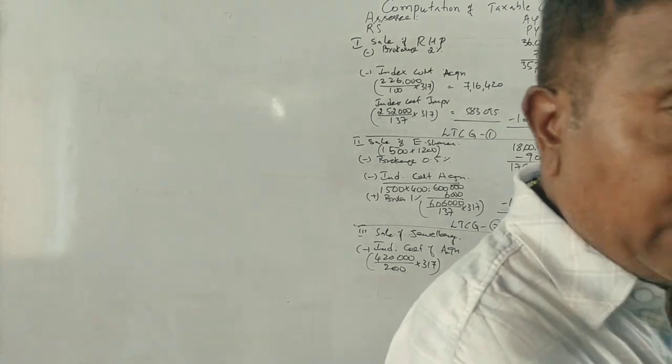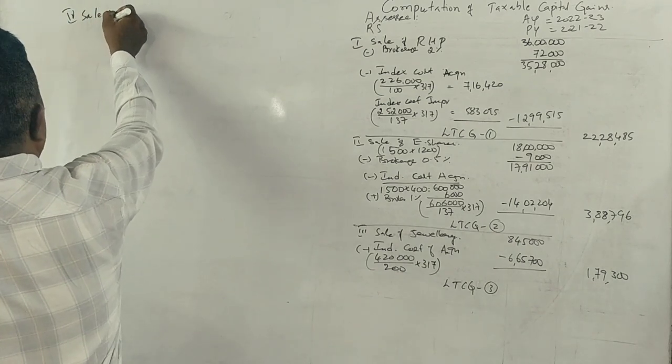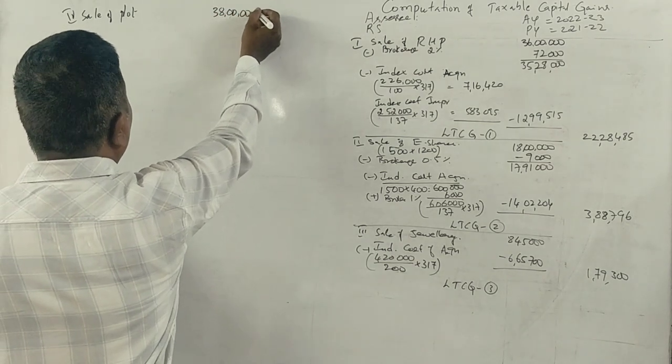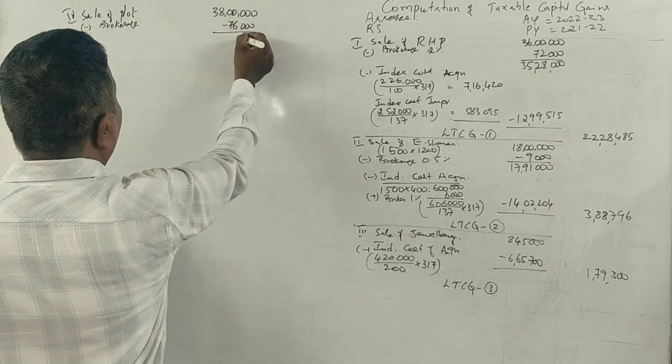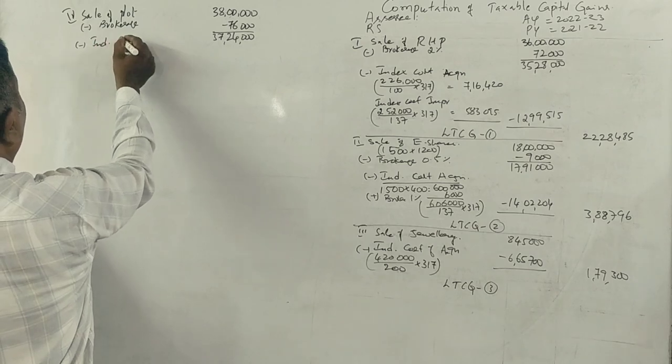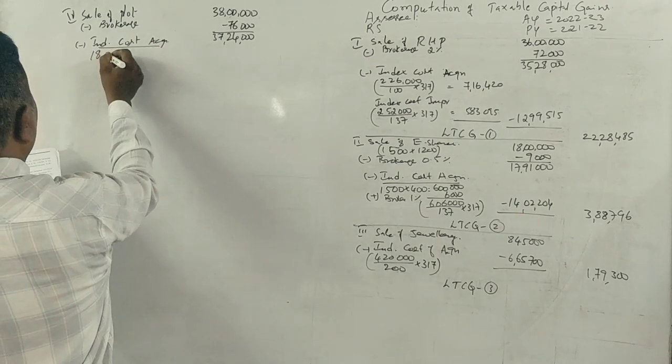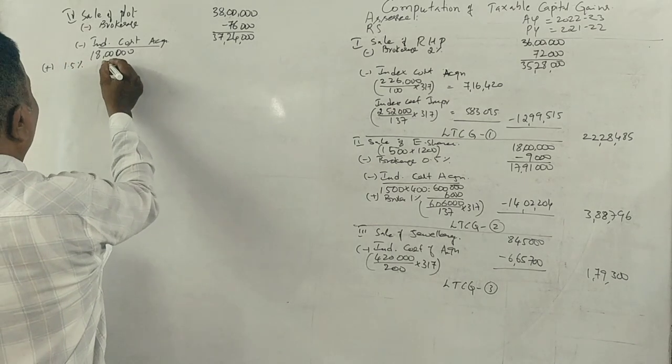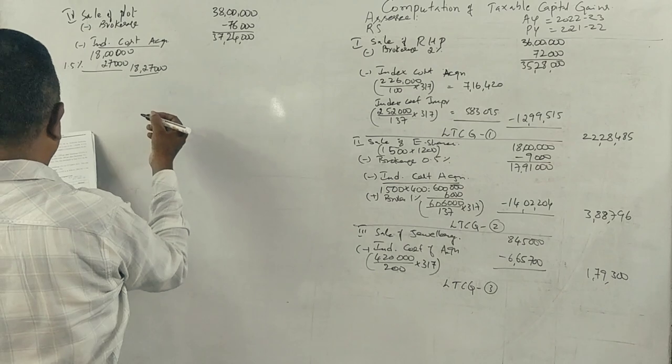Last one, sale of urban plot: 38 lakhs minus commission brokerage of 2% which is 76,000 equals 37,24,000. Index cost of acquisition: 18 lakhs plus 1.5% brokerage which is 27,000 equals 18,27,000, divided by 215 (the 2013 index) multiplied by 317.